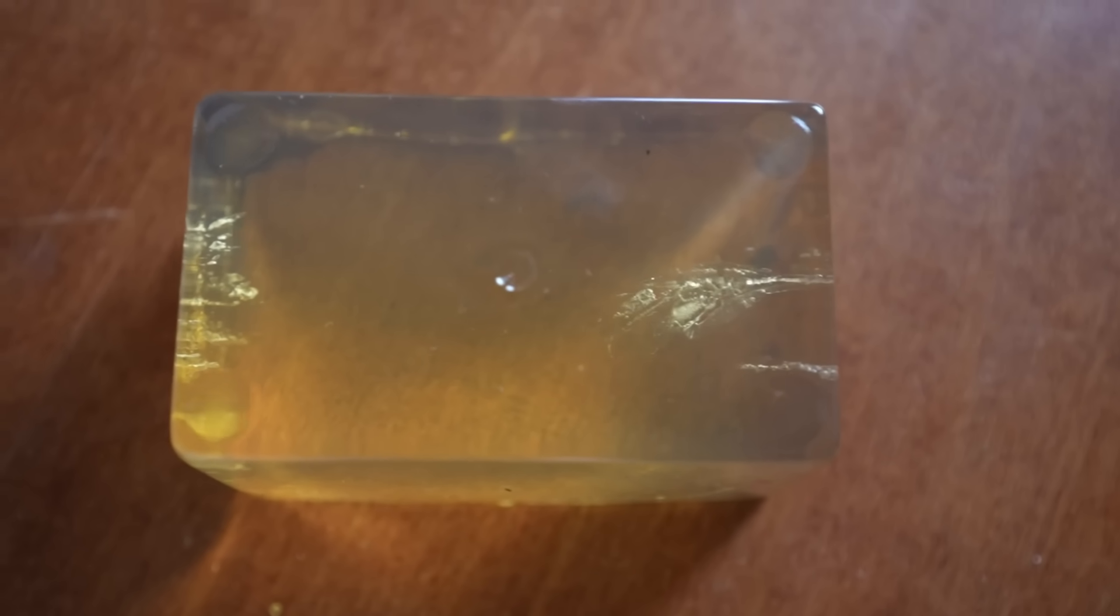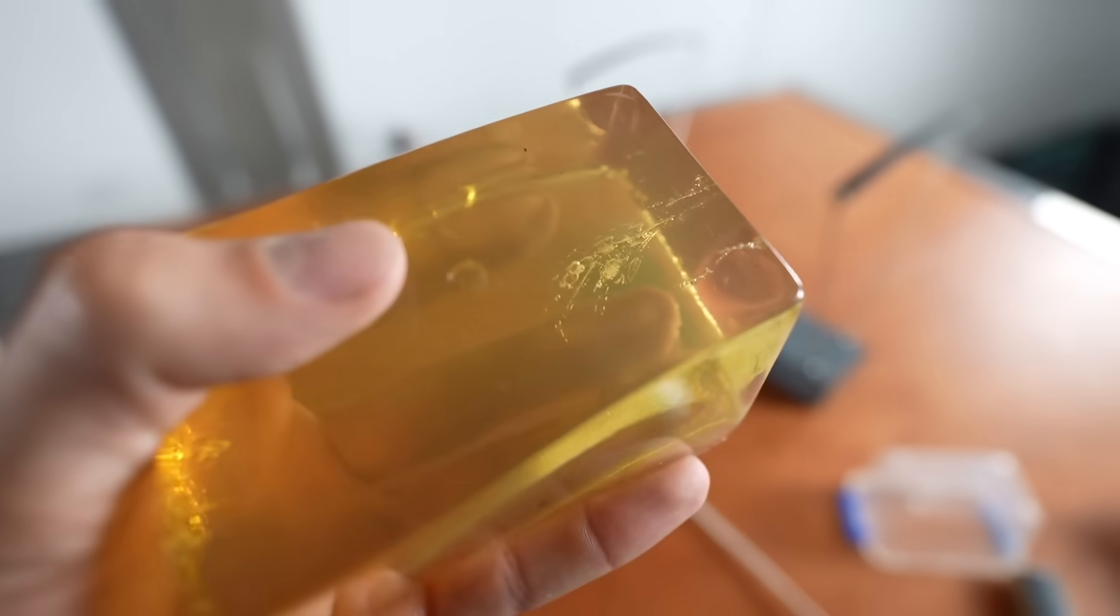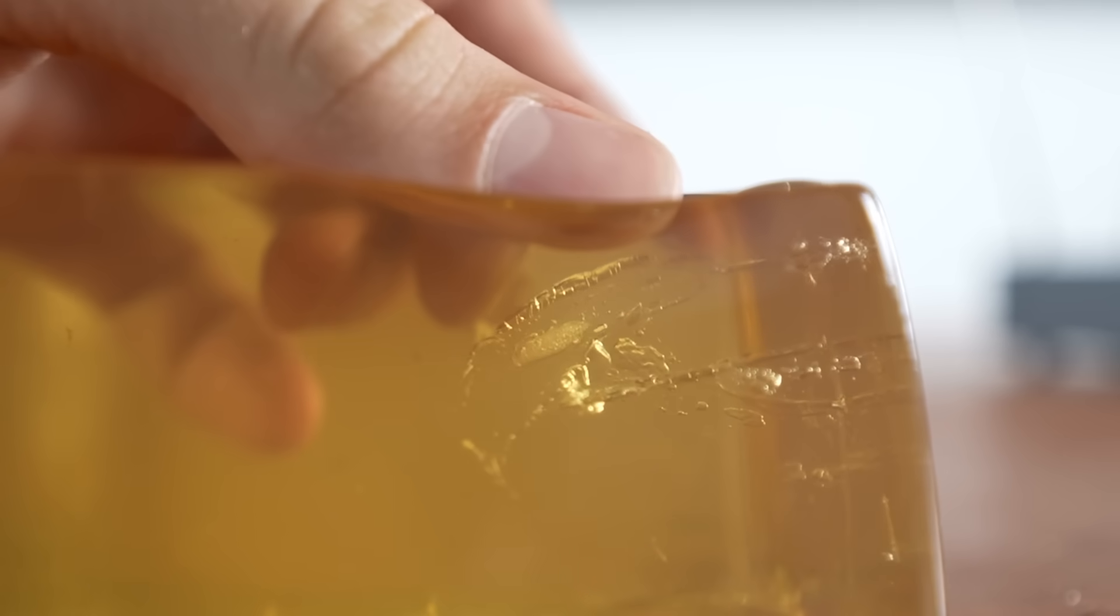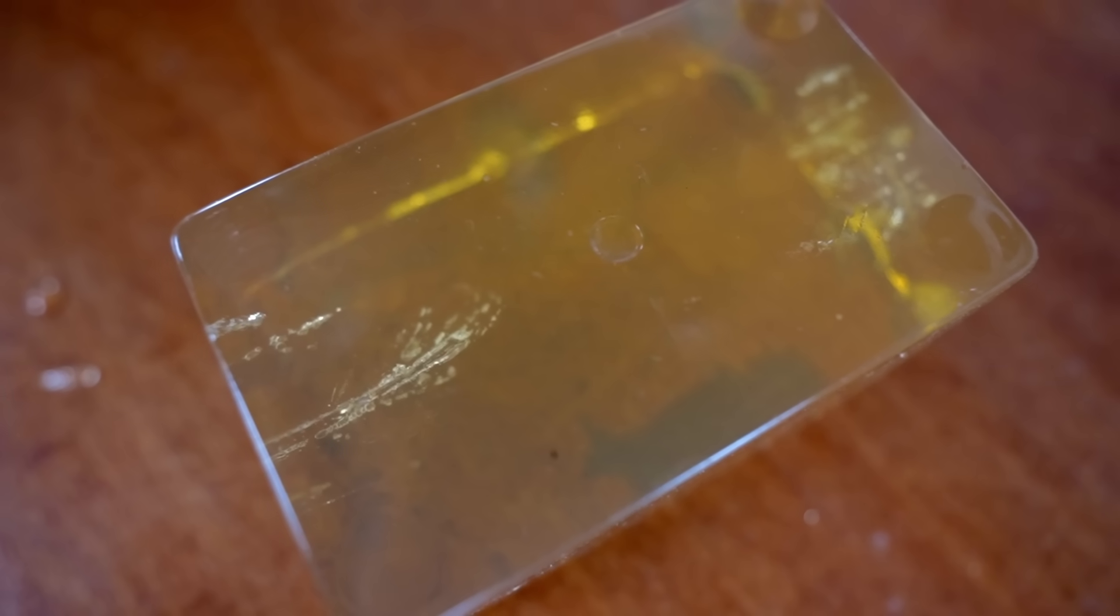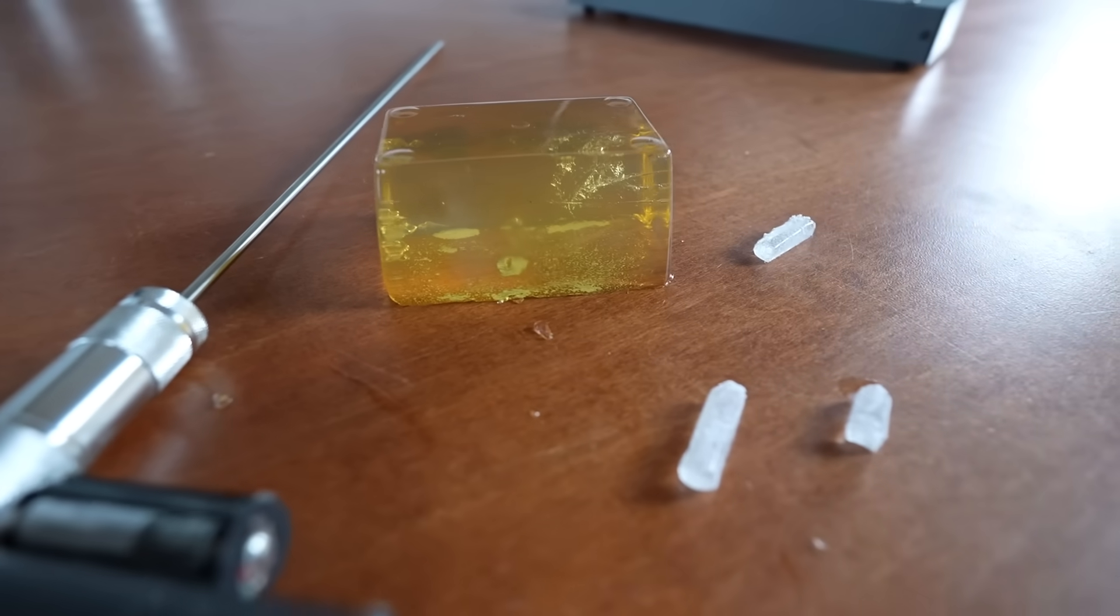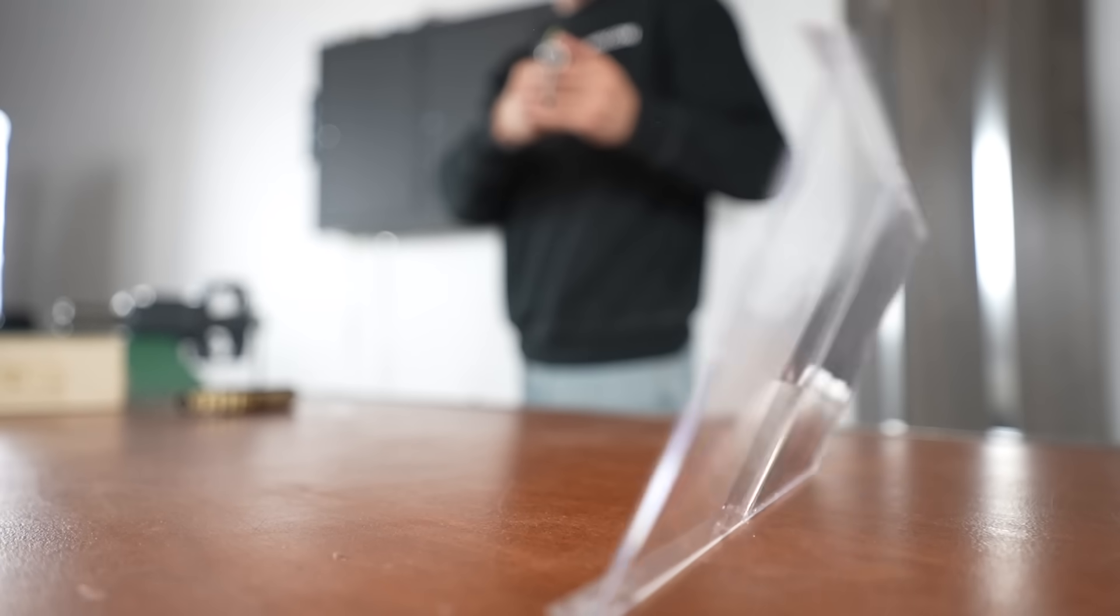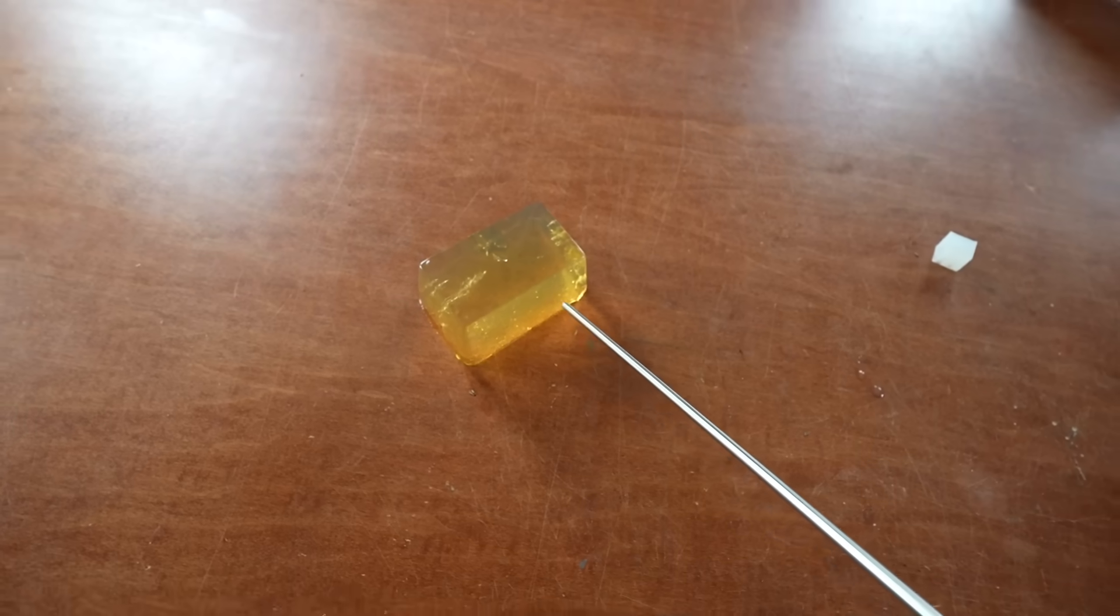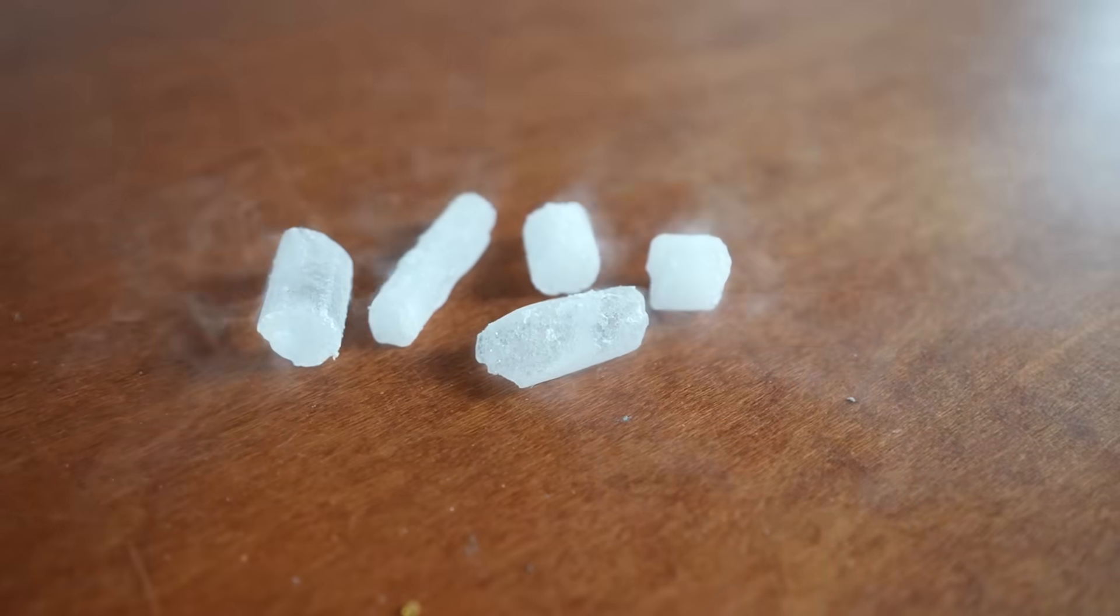After a few shots into the ballistics gel it looked pretty strange because you could clearly see the path where the ice traveled but there was no visible ammo left behind. I was honestly very surprised with how much better the ice fired just from cooling the barrel that much more.